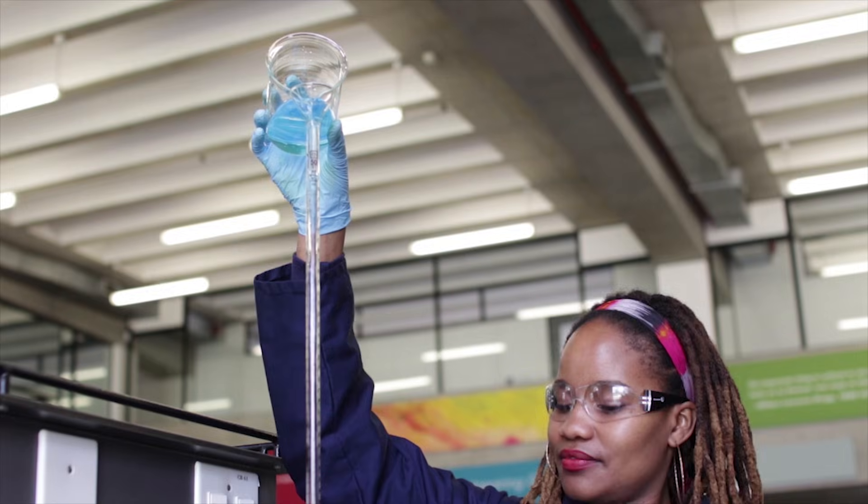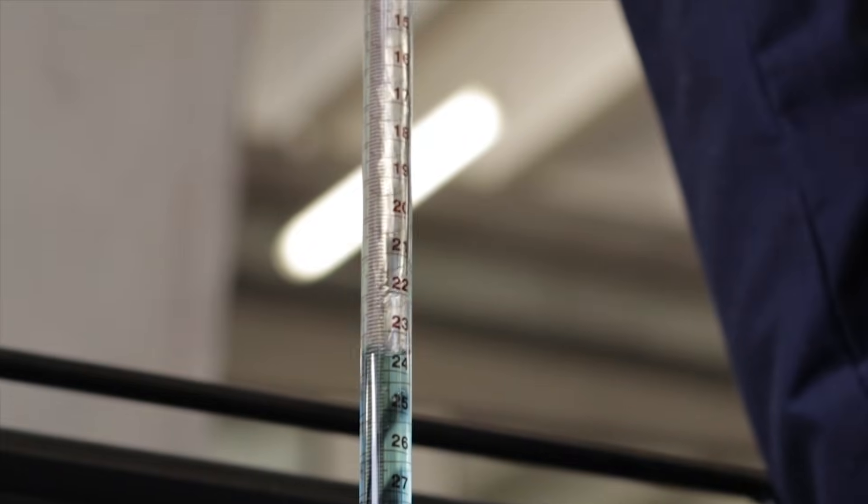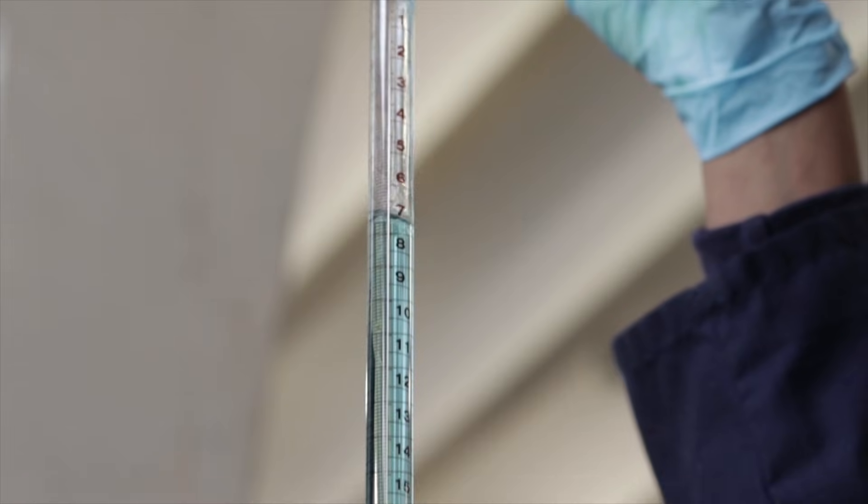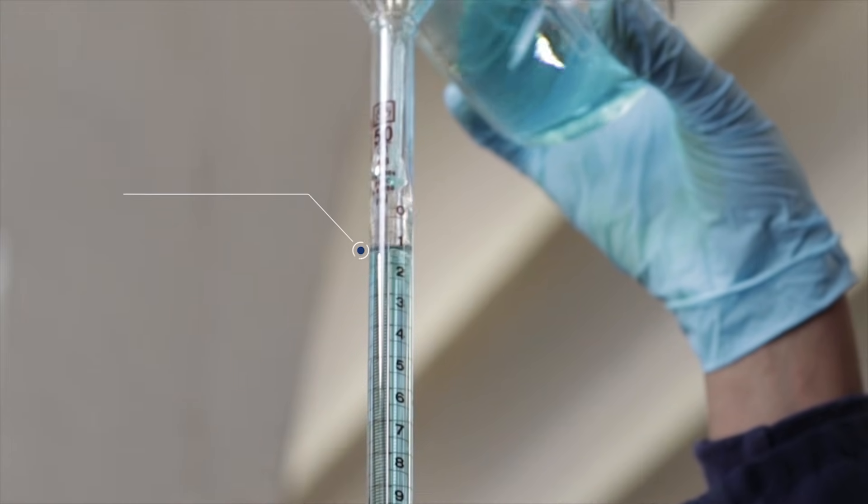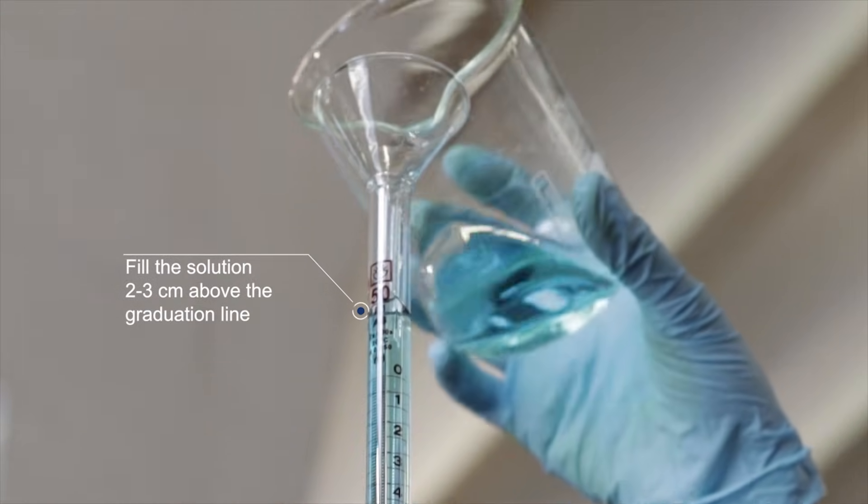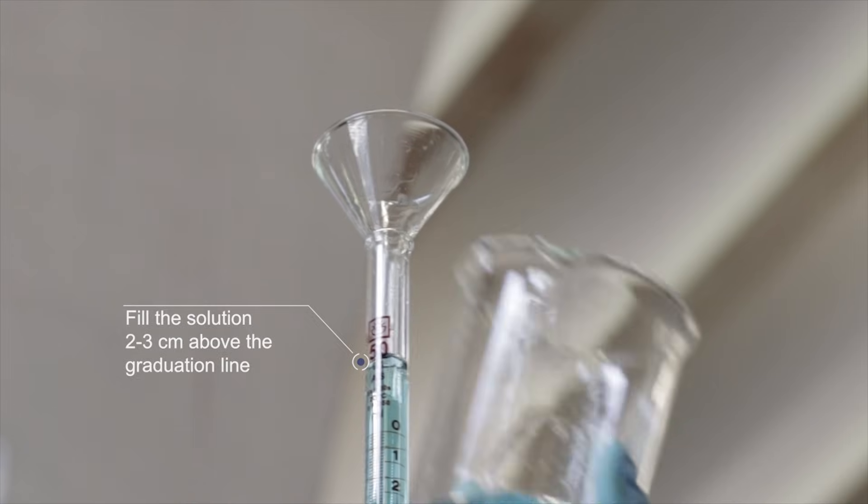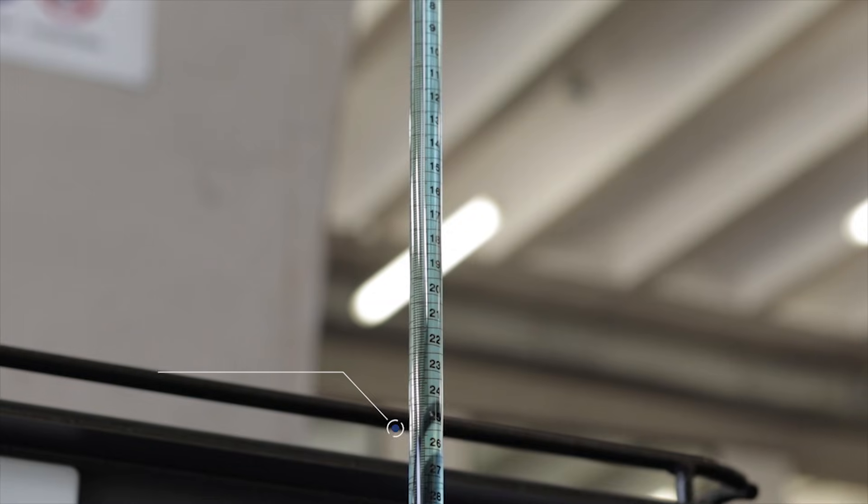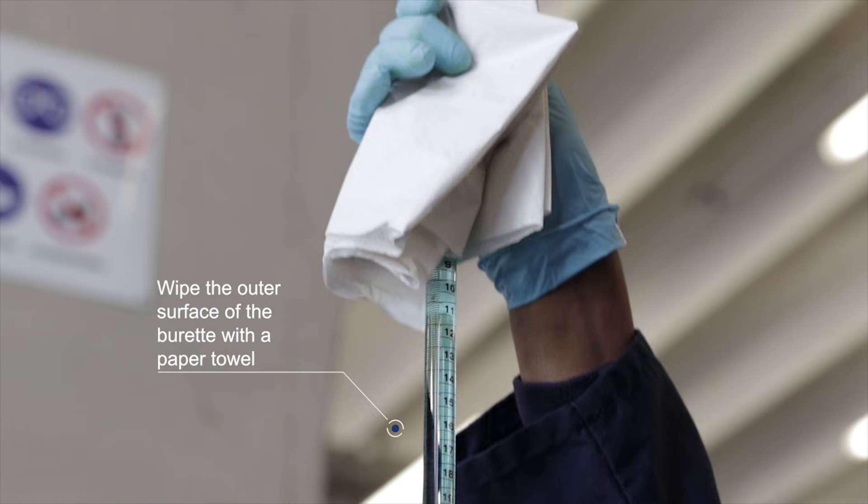The solution is poured into the burette using a small beaker up until the burette is filled two to three centimeters above the zero graduation line. Once the burette has been filled always take the funnel out of the burette and wipe the outer surface of the burette with a paper towel.